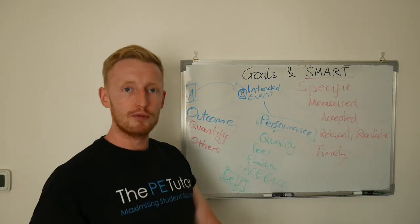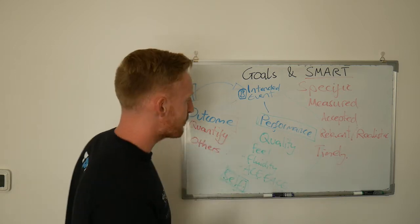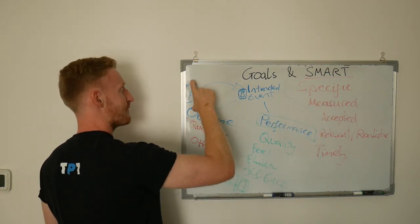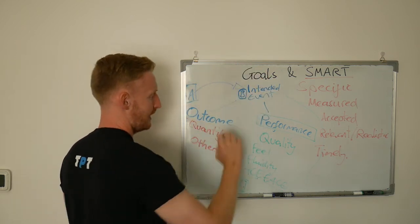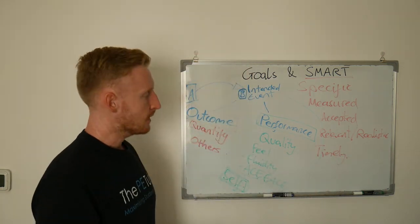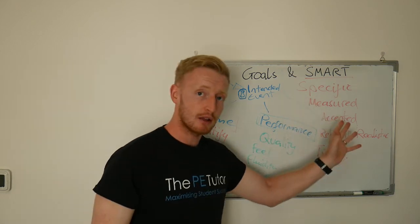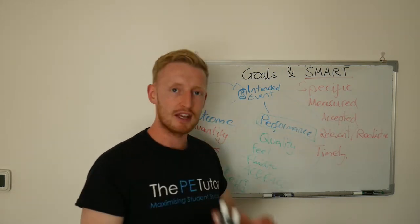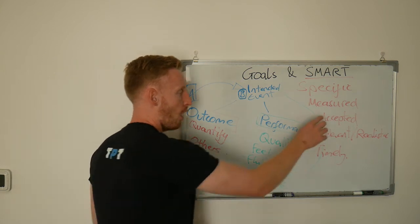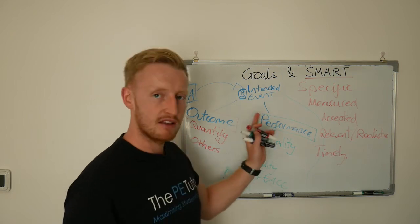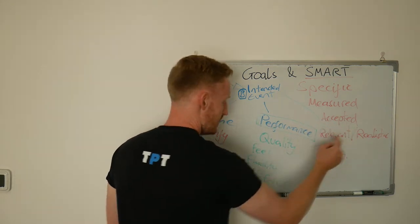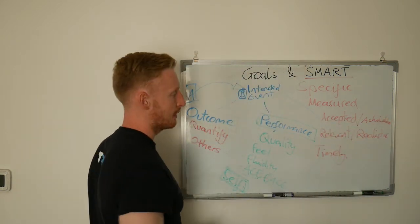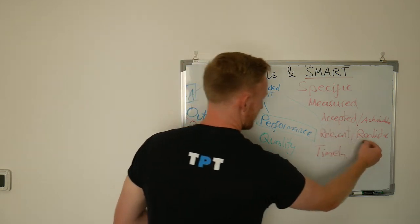Accepted — do the people involved agree with what's about to be undertaken? Do they accept that it's going to be a reality that they can get from point A to point B, or is it too much of a leap? Is it unrealistic? The trainers, coaches, and performers themselves — are they on board? Do they accept that this new development is going to move them in the right direction? Is it a realistic expectation at this point in their career? The A can also stand for achievable. You'll notice the A's and R's can be used a little bit interchangeably — achievable, relevant, accepted, realistic.